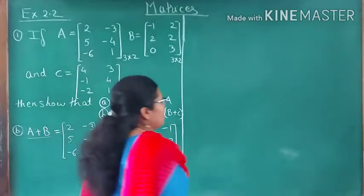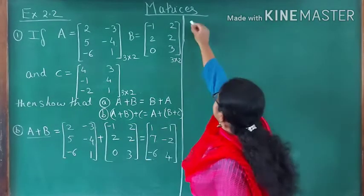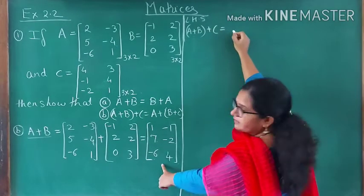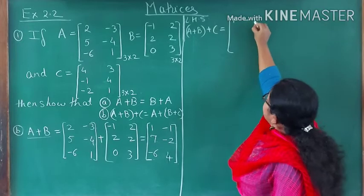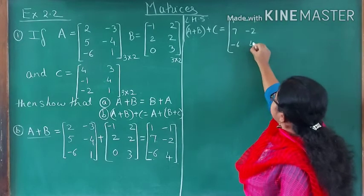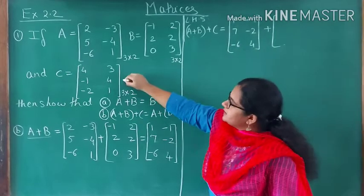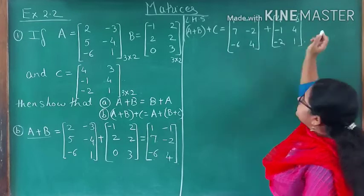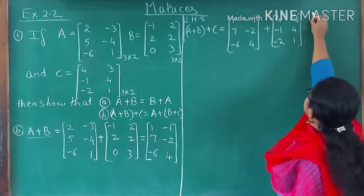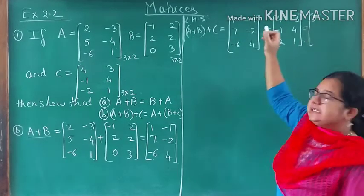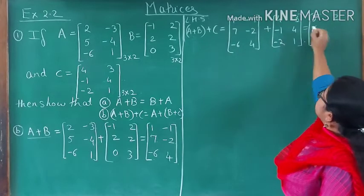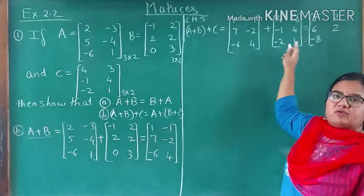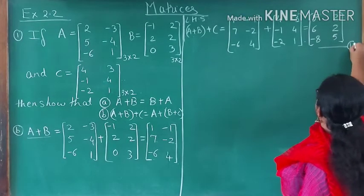Now find (A+B)+C, which is the LHS. Take the A plus B result — matrix [1, -1; 7, -2; -6, 4] — and add matrix C: [4, 3; -1, 4; -2, 1]. Adding corresponding elements: 1+4=5, -1+3=2, 7+(-1)=6, -2+4=2, -6+(-2)=-8, and 4+1=5. This result [5, 2; 6, 2; -8, 5] is your LHS. Name this equation one.